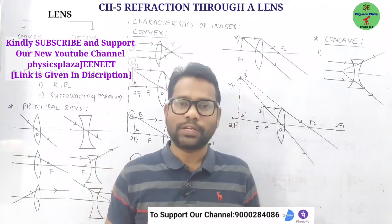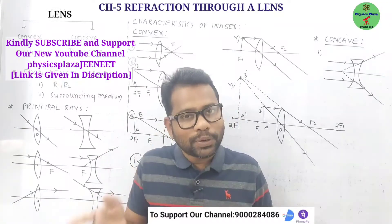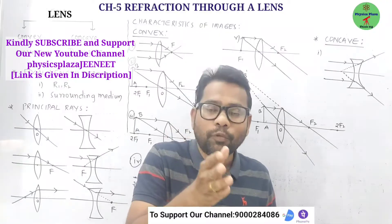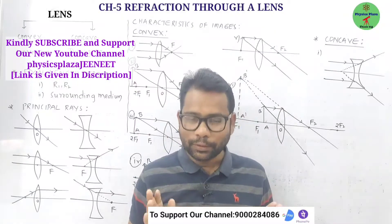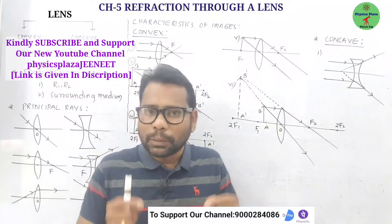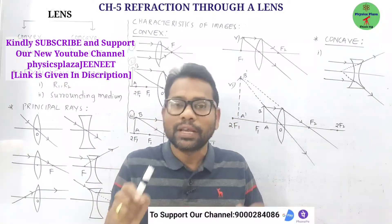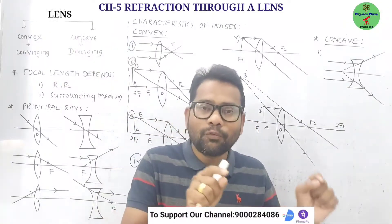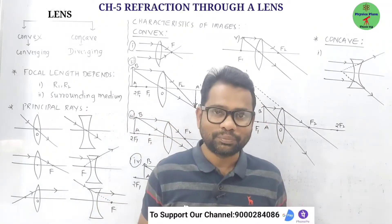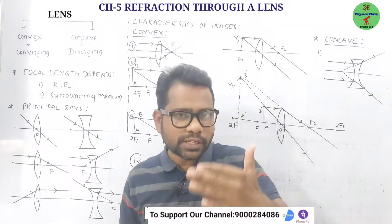The focal length is the distance from the optic center to the focus of the lens. The focal plane is the plane passing through the focus and perpendicular to the principal axis.